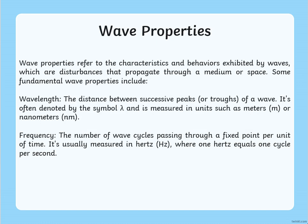Moving to wave properties. Wave properties refer to the characteristics and behaviors exhibited by waves, which are disturbances that propagate through a medium or space. Some fundamental wave properties include wavelength, which is the distance between successive peaks or troughs of a wave, often denoted by the symbol lambda and measured in units such as meters or nanometers. Frequency is the number of wave cycles passing through a fixed point per unit of time, usually measured in Hz, where 1 Hz equals 1 cycle per second.